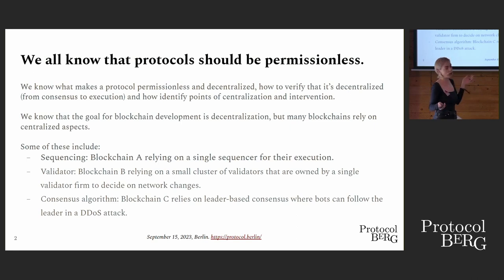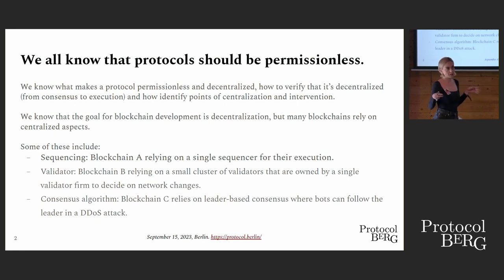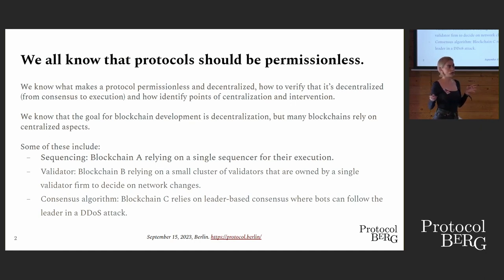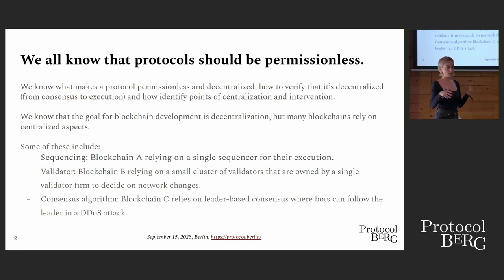The second example would be validators. Blockchain B relies on a small cluster of validators owned by a single validator firm to validate network changes. We've seen cool innovation with distributed validator sets, but a huge problem is that many validator firms are acting under the guise of one validator while operating a large cluster — and this is another point of centralization.